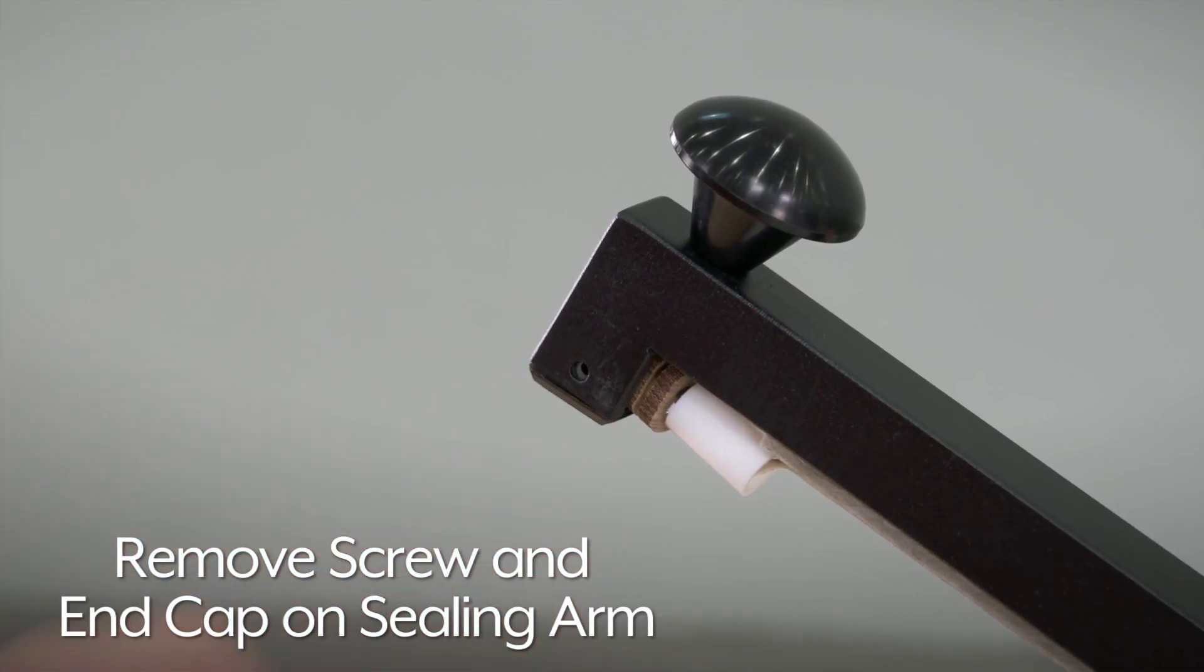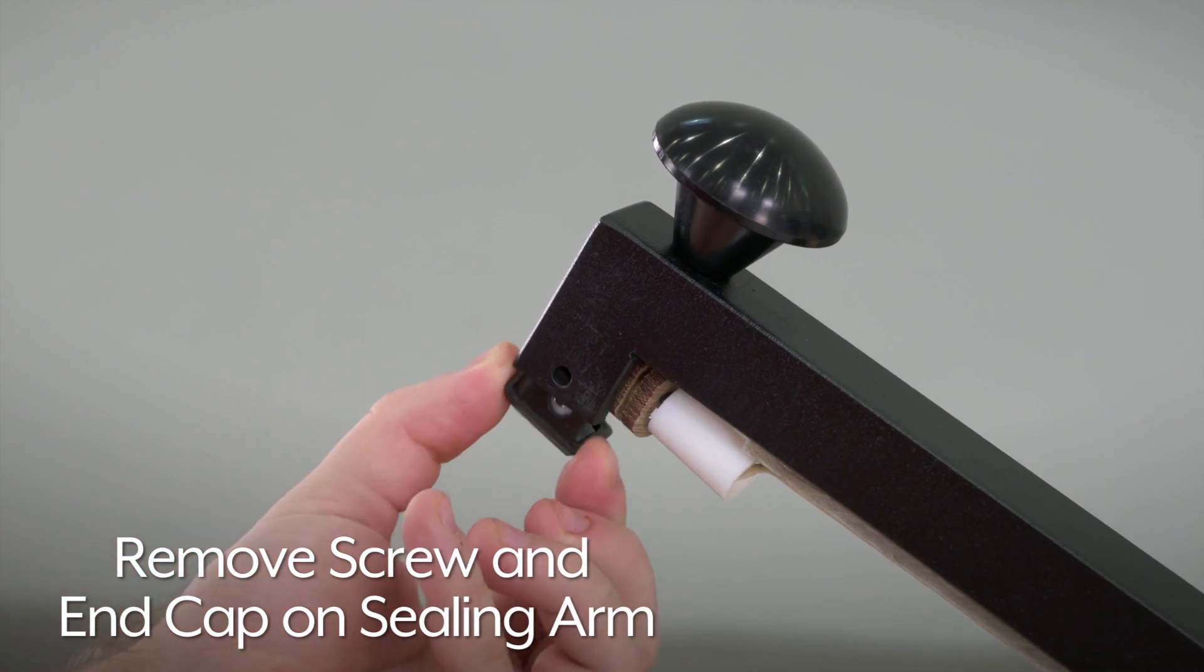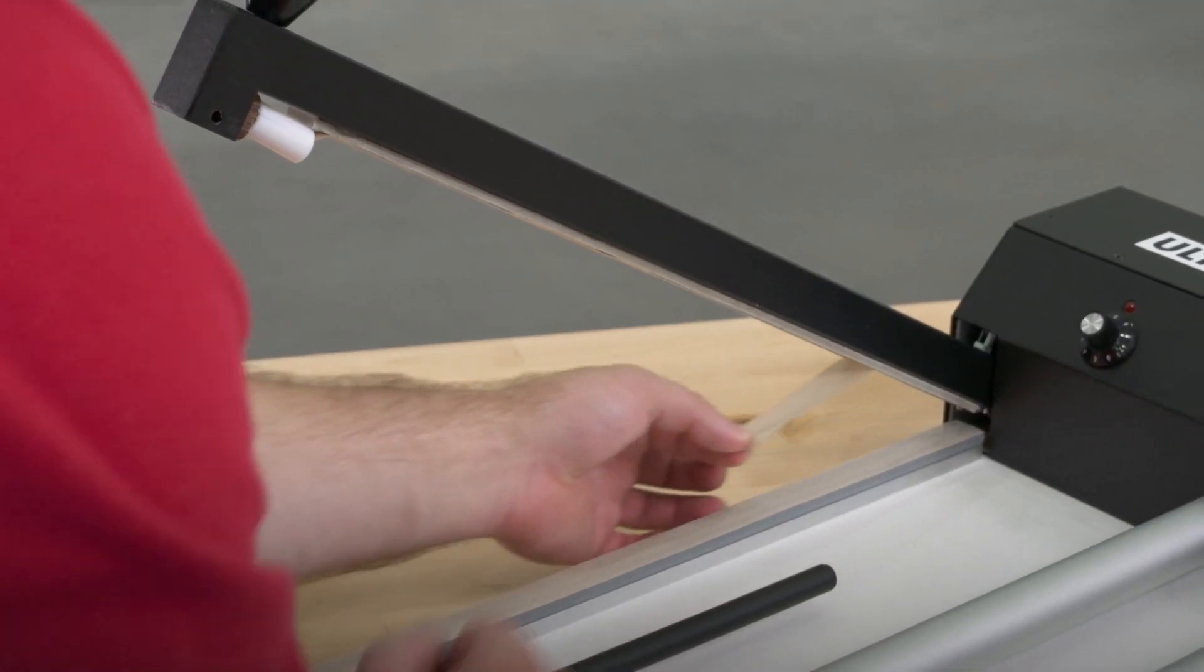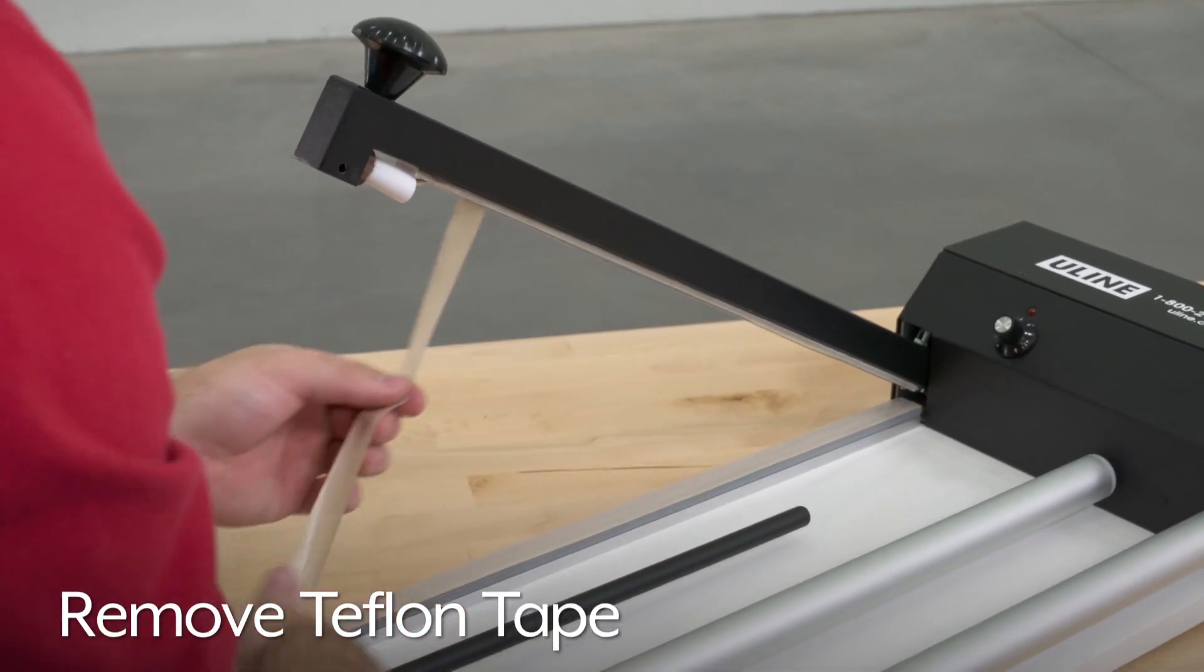Remove the black plastic screw and end cap on the end of the sealing arm. If your sealer has Teflon tape over the sealing wire, remove this tape.